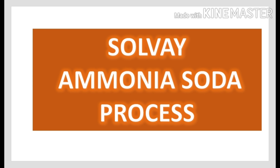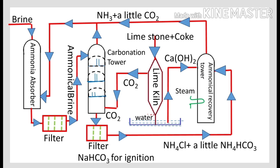In the Solvay Ammonia Soda Process, Sodium Bicarbonate and Sodium Carbonate are prepared by using Brine Solution. Brine Solution is nothing but seawater. Seawater contains Sodium Chloride along with Magnesium, Iron, and Calcium salts. This is the schematic diagram of the Solvay Ammonia Soda Process.